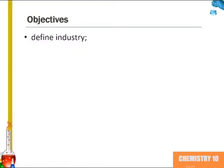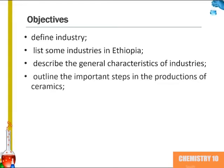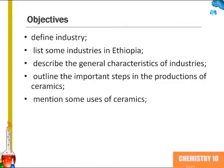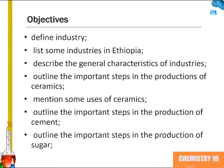By the end of this subunit you should be able to define industry, list some industries in Ethiopia, describe the general characteristics of industries, and outline the important steps in production of ceramics, mention some uses of ceramics, outline the important steps in production of cement, as well as outline the important steps in production for sugar.